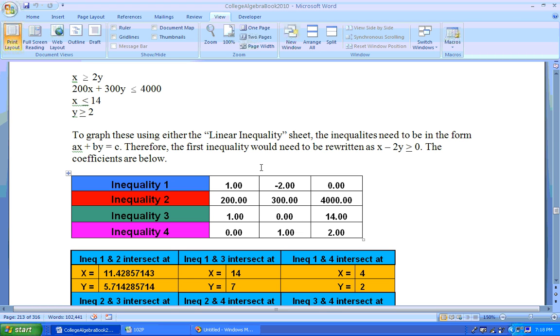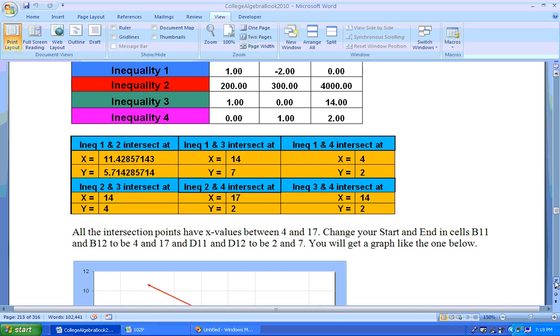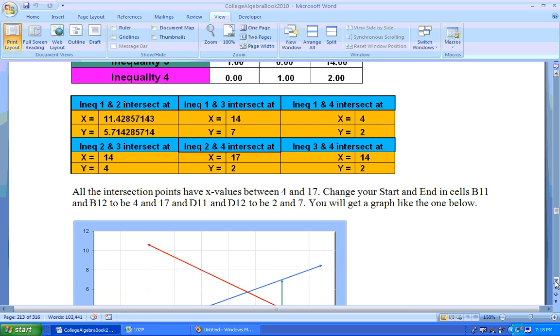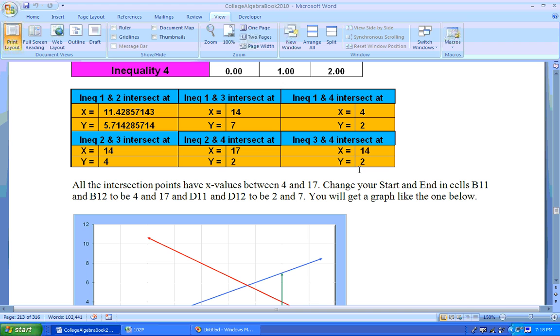And once you get those into that sheet, it will tell you all the points of intersection automatically. And then what you do is set your start and end on the sheet to be, for your Xs,